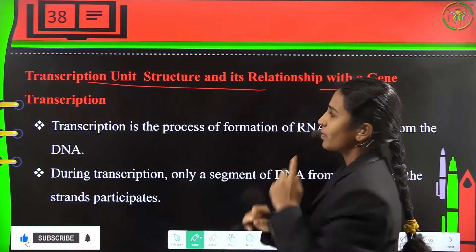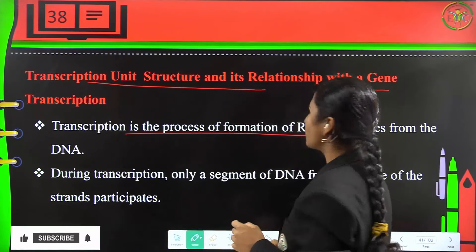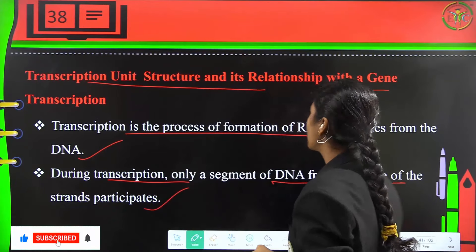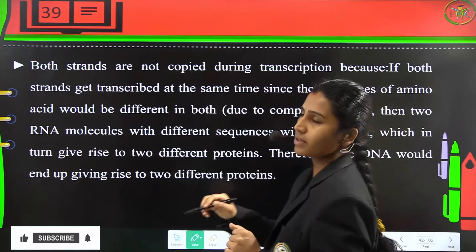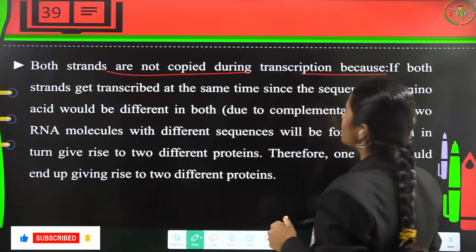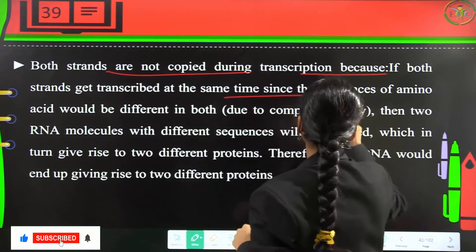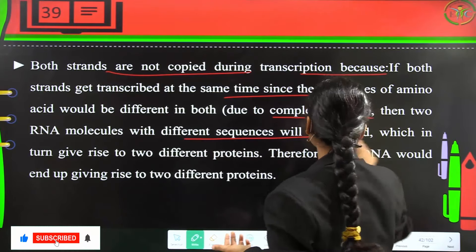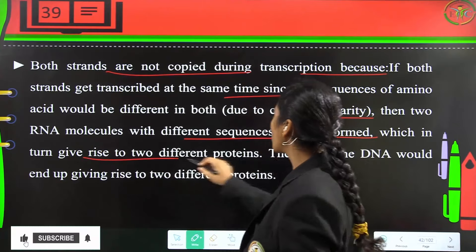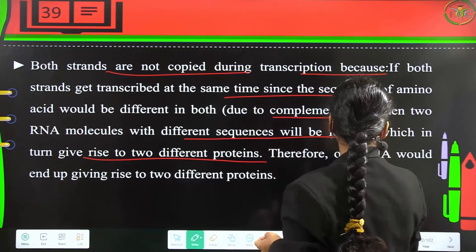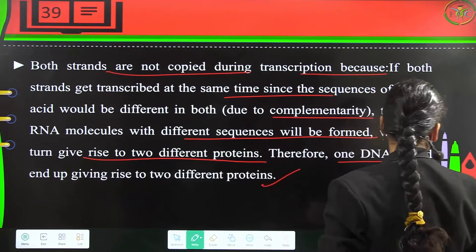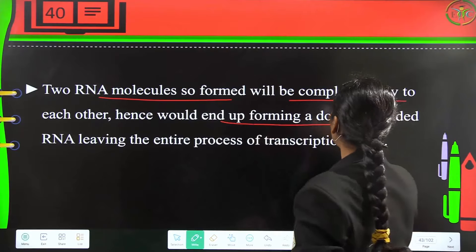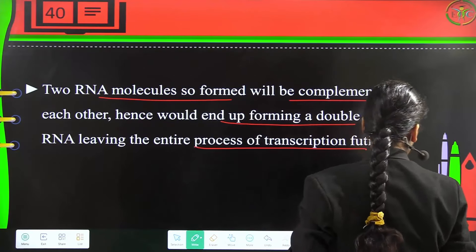Transcription is the process of formation of RNA molecules from DNA. During transcription, only one segment of DNA from only one strand participates — not both strands. Both strands are not copied because if both were transcribed simultaneously, since the sequences of amino acids would differ due to complementarity, two different RNA molecules would form, giving rise to two different proteins. Additionally, the two complementary RNA molecules would form a double-stranded RNA, making the entire process futile.